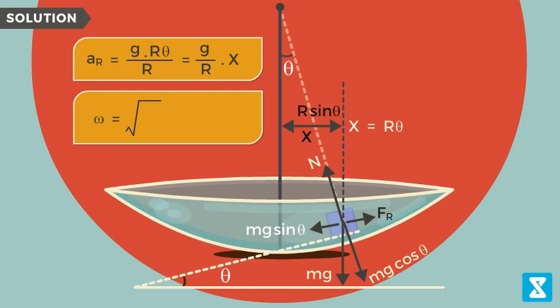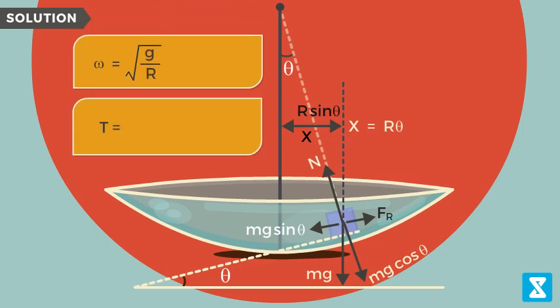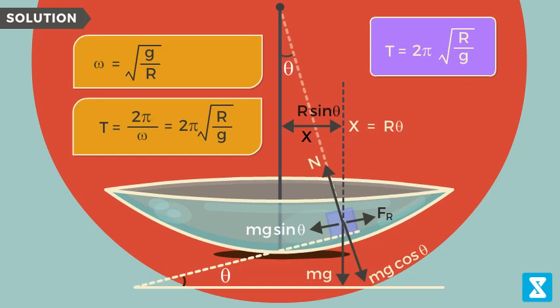Now time period is given by 2π by omega, or 2π times root under R by g. This is our answer. This concludes our video on time period problem.